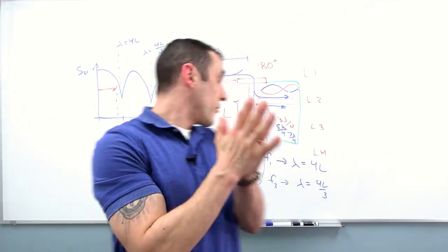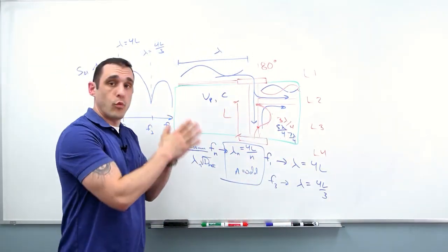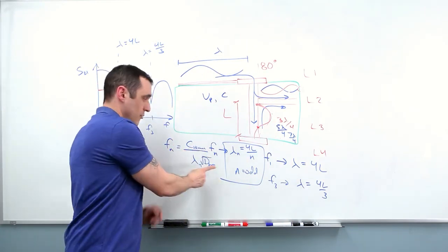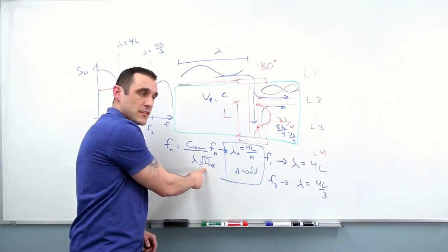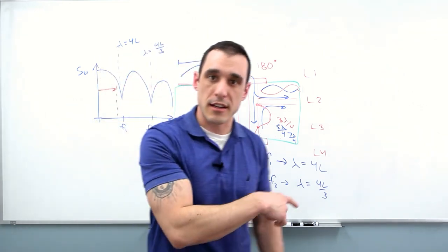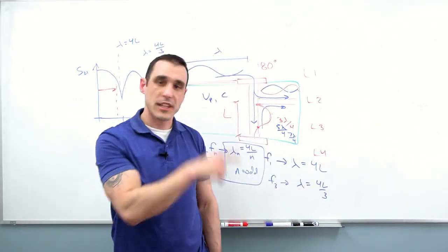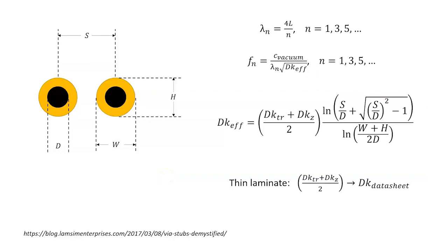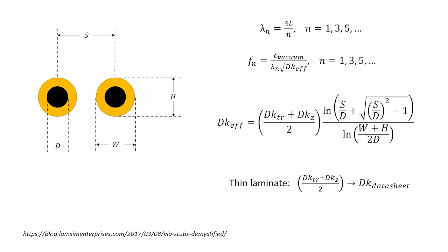So Waleed, back to your question. Before we actually calculate what the data rate that you can support is and what frequencies you can support, we need to look at DK Effective. To do that, I've actually prepared a couple of slides, and we're going to look at that now. Okay, so what we're looking at in this slide is everything that you basically need to know in order to calculate what the stub length is for a given frequency, or the smallest resonant frequency for a given stub length.